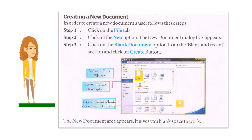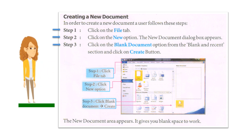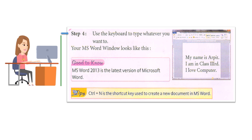Creating a New Document: In order to create a new document, a user follows these steps. Step 1: Click on the File tab. Step 2: Click on the New option. The New Document dialog box appears. Step 3: Click on the Blank Document option from the Blank and Recent section and click the Create button. Step 4: Use the keyboard to type whatever you want. CTRL+N is the shortcut key used to create a new document in MS Word.